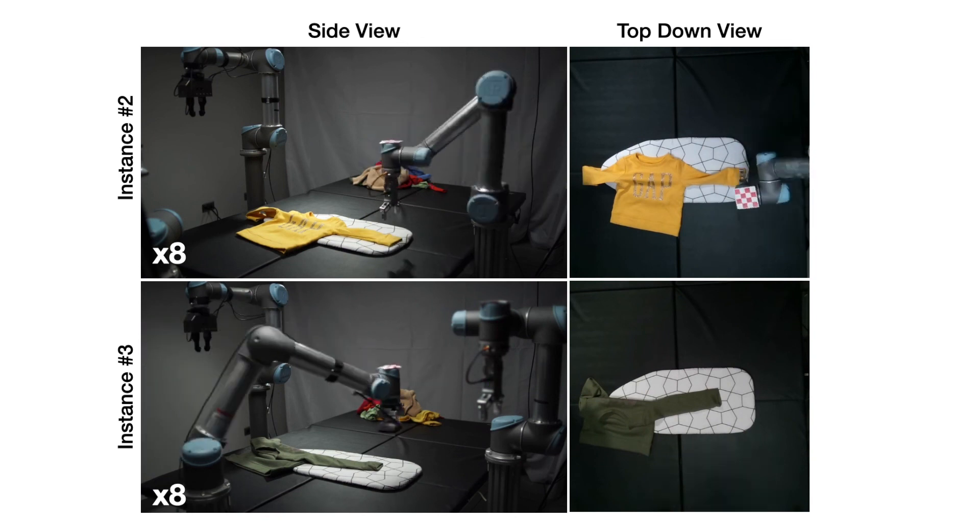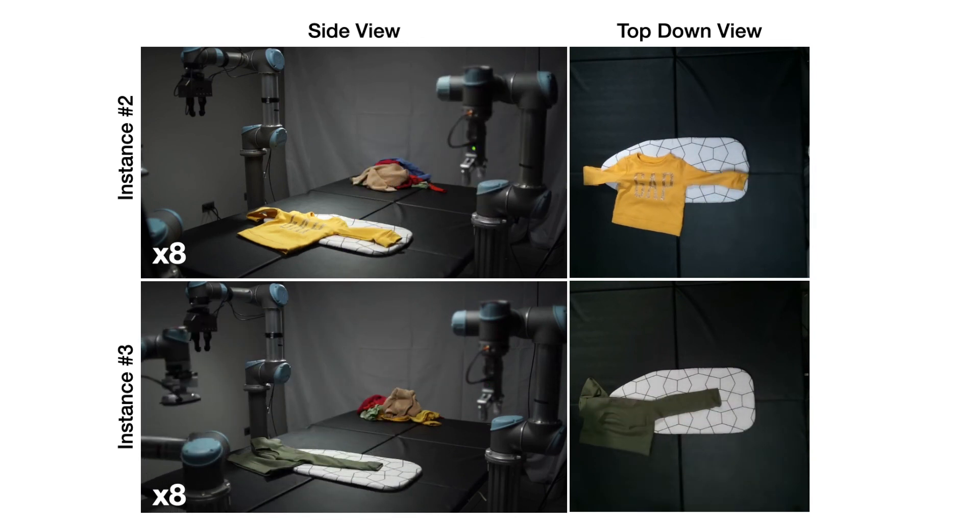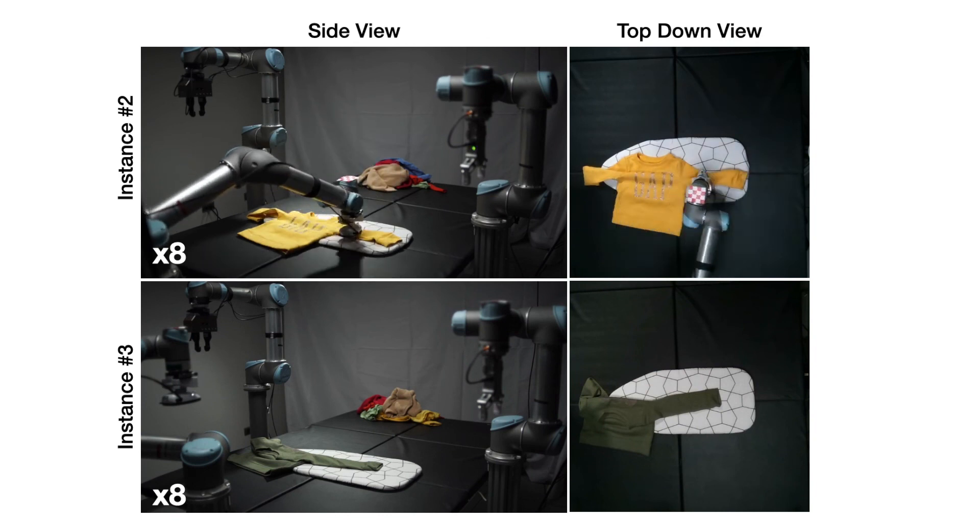Note that there's a bit of a sim-to-real gap with the green shirt at the bottom here, since the collar doesn't fold in like this in simulation. A useful research direction for the future could be looking into how to derive this supervision for canonicalized alignment in the real world.